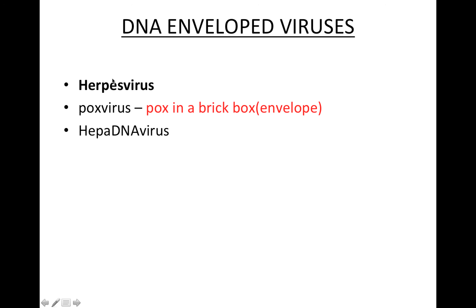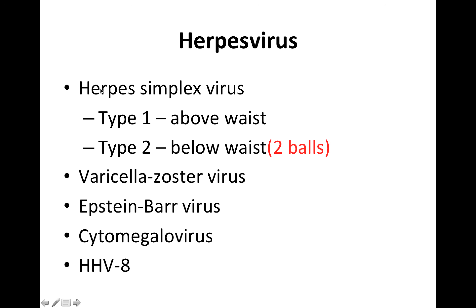We're going to focus on herpes virus for the rest of this video. The herpes simplex virus includes type 1 and type 2. Type 1 is broadly categorized as above the waist, and type 2 as below the waist. To distinguish them, think 'two balls' — type 2 deals with genital lesions. We also have varicella zoster virus, Epstein-Barr virus, cytomegalovirus, and HHV-8 (Kaposi's).